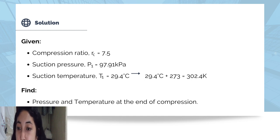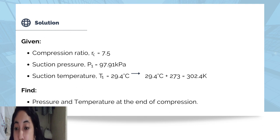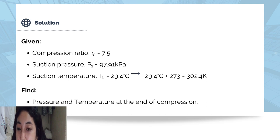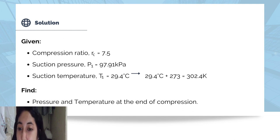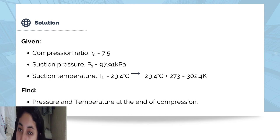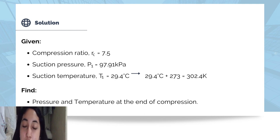The given values are: compression ratio is 7.5; suction pressure P1 equals 97.91 kilopascals; suction temperature T1 equals 29.4 degrees Celsius, which converts to 302.4 Kelvin by adding 273. We must find and identify the pressure and temperature at the end of compression.